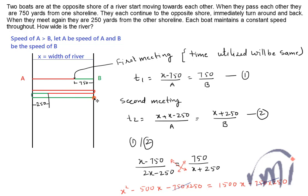B which started from this side of the river first met A over here, then continues its journey and reaches over here, then again immediately turns around and both of them meet over here for the second time. This time they are meeting 250 yards from the other shoreline.